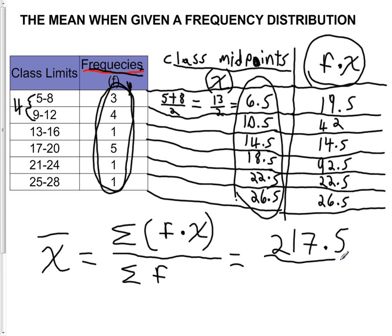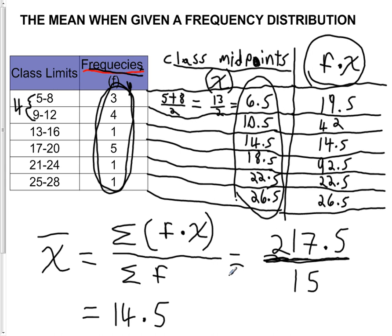The denominator of this fraction is the sum of the frequencies. Adding up the frequency column: 3 plus 4 is 7, plus 1 is 8, plus 5 is 13, plus 1 is 14, plus 1 is 15. That is the size of our original data set — the sum of the F's is the same as n. So we get 217.5 divided by 15, which turns out to be 14.5. So x-bar is 14.5, and that is how we calculate the mean whenever we're given a frequency distribution instead of raw data.